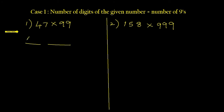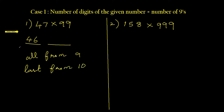Now to find the second part of the answer, we use the rule: all from 9, last from 10. Do this subtraction — 9 minus 4 is 5, then 10 minus 7 is 3. That's all. So the answer is 4653 — 46 is the first part, 53 is the second part. 4653 is the answer.